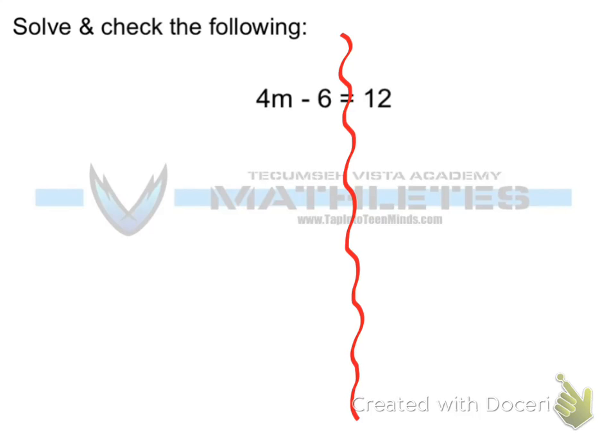In order to do that we think about opposite operations and since we see a negative six we're going to add a six. Whatever we do on one side we have to do on the other. The goal here is that we want to essentially eliminate that negative six. So negative six plus six is zero and we're left with 4m on the left equals 12 plus 6 is 18 on the right. There's our first step.